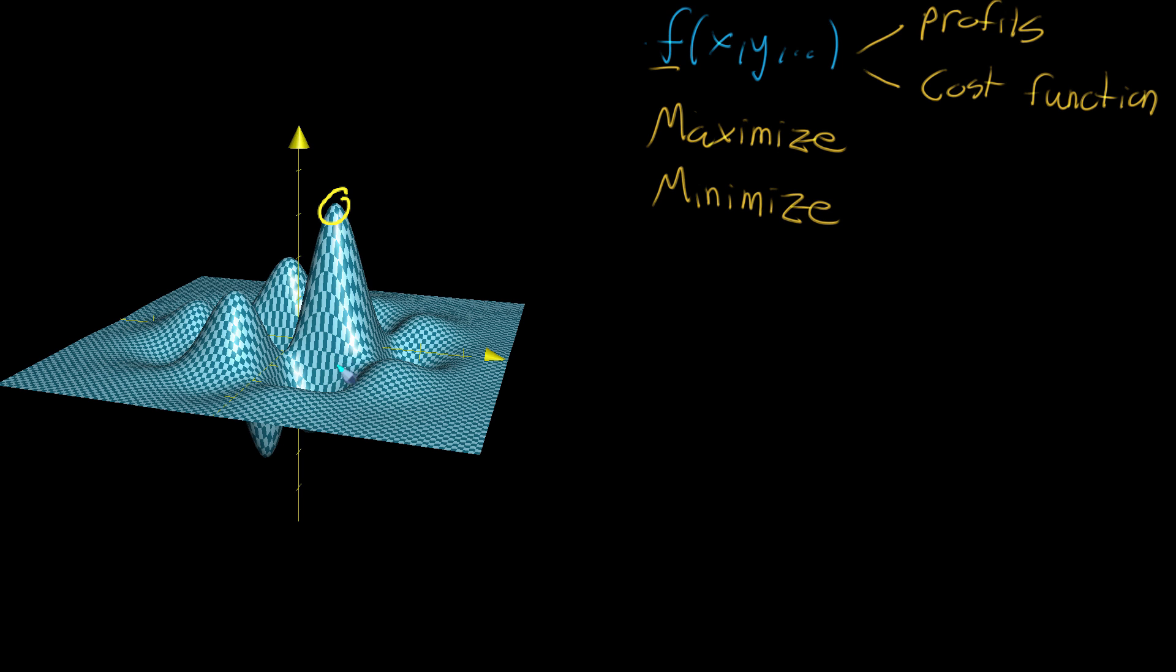You're looking for the input value, the point on the xy-plane directly below that peak, because that tells you the values of the inputs that you should put in to maximize your function. So how do you go about finding that?